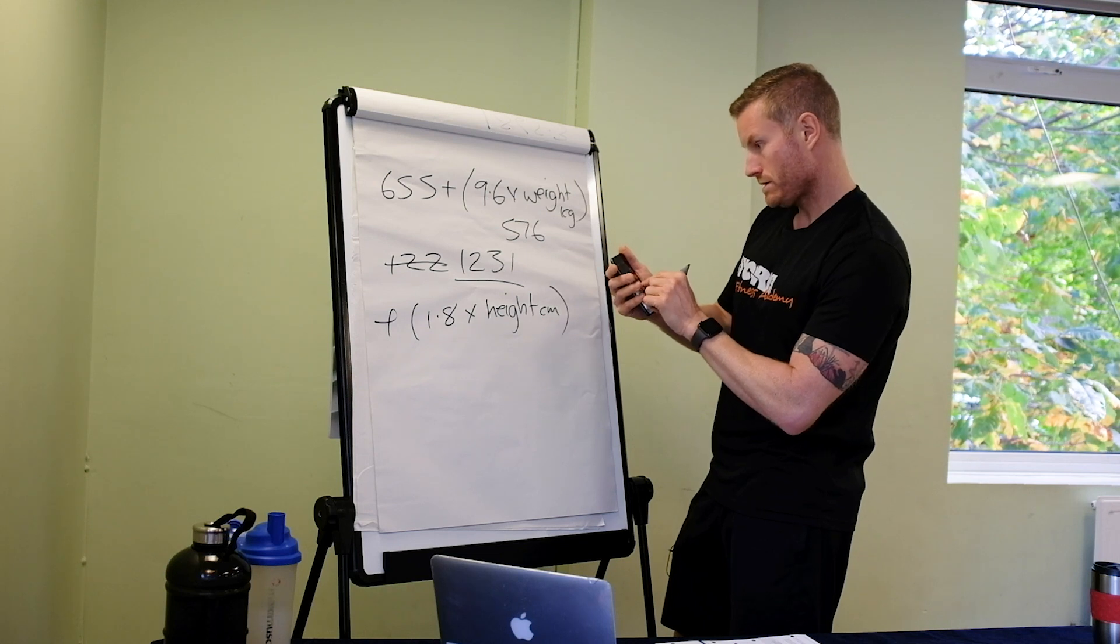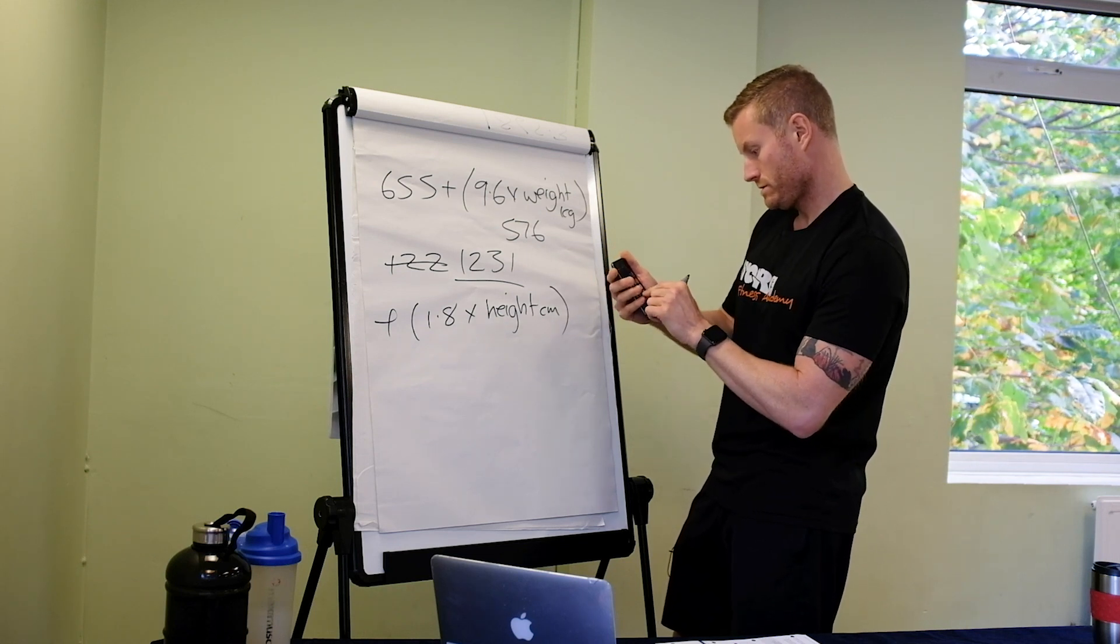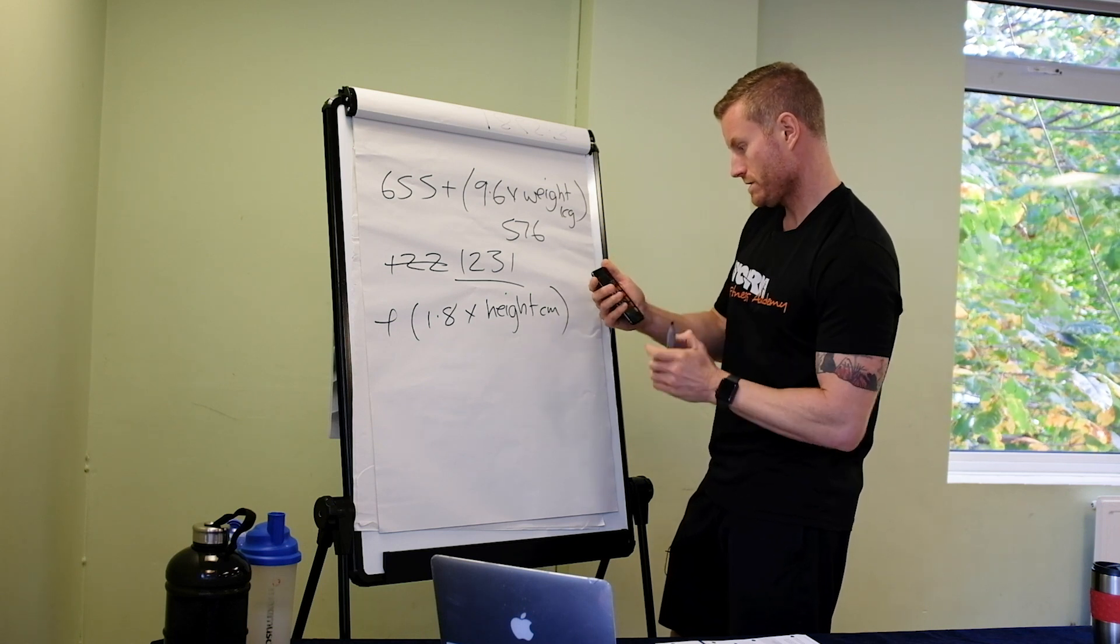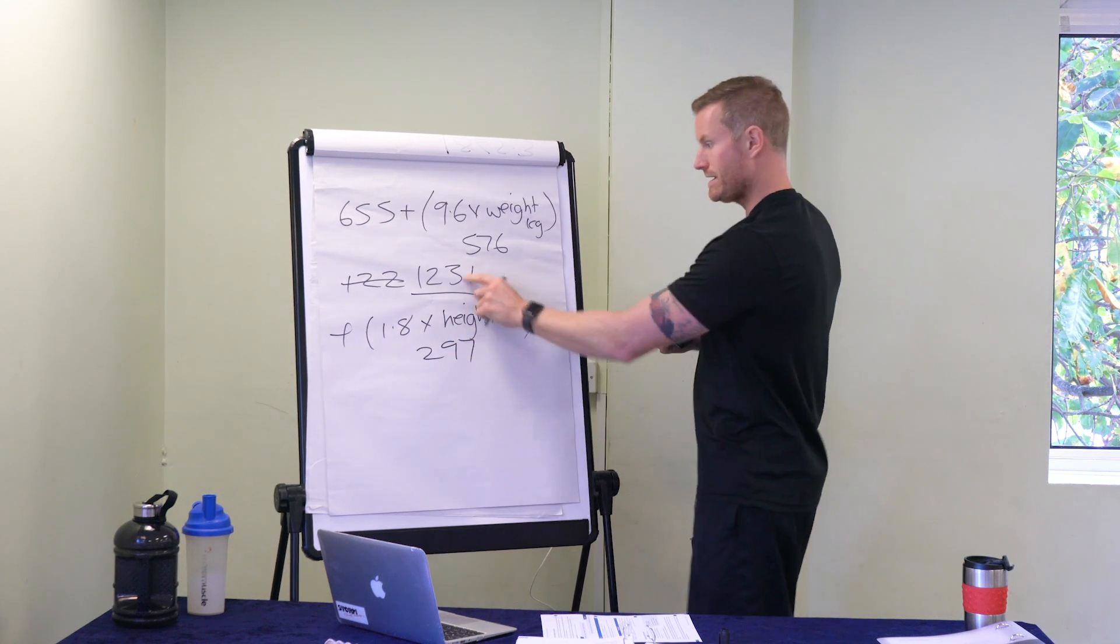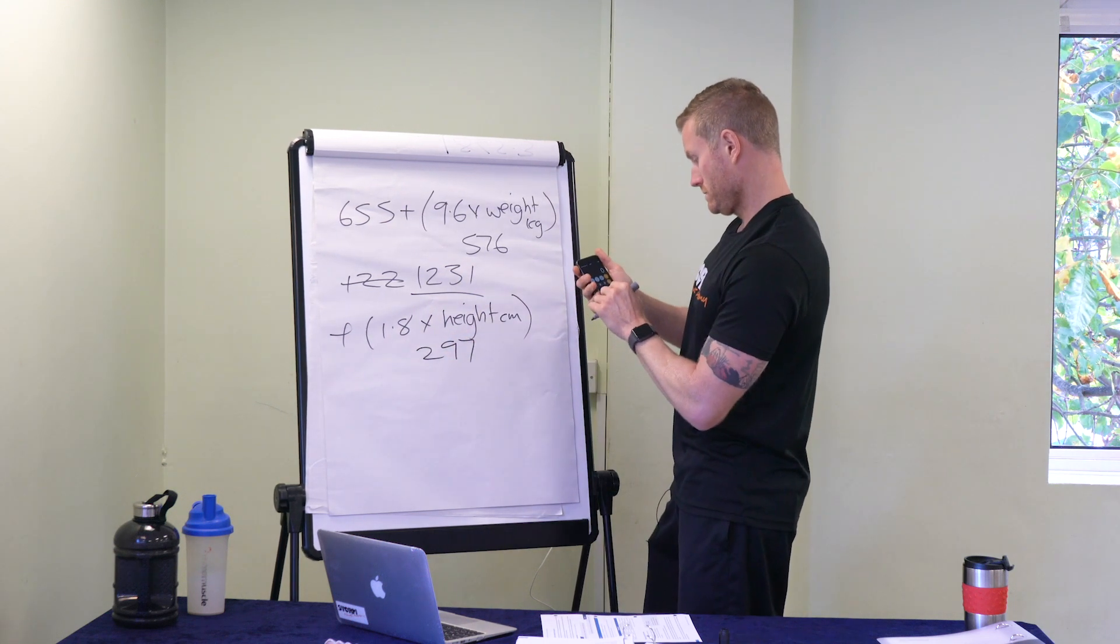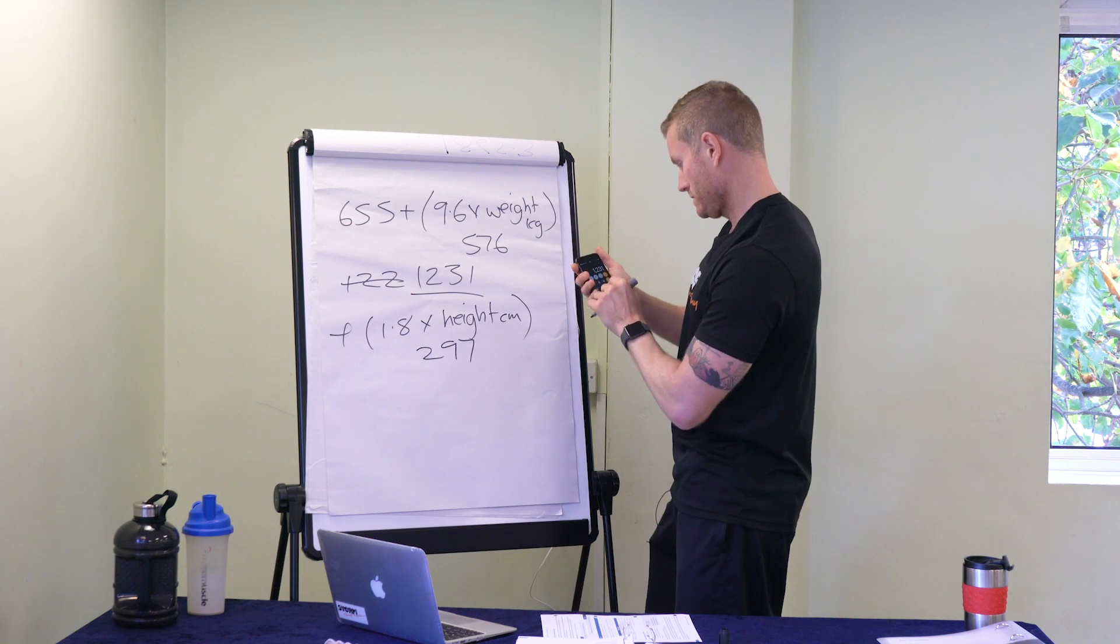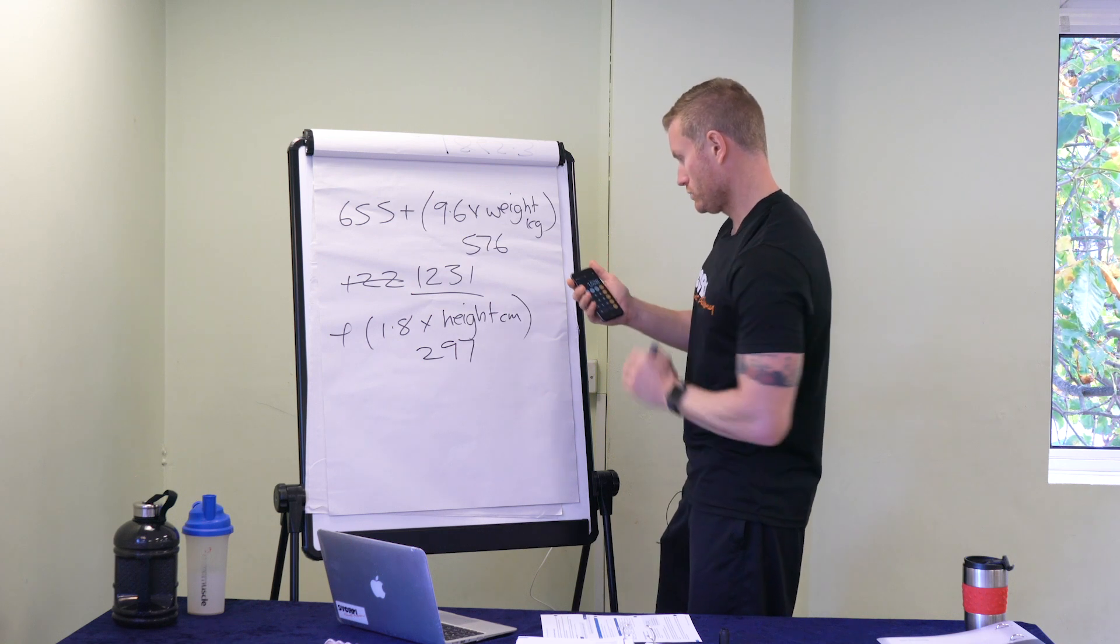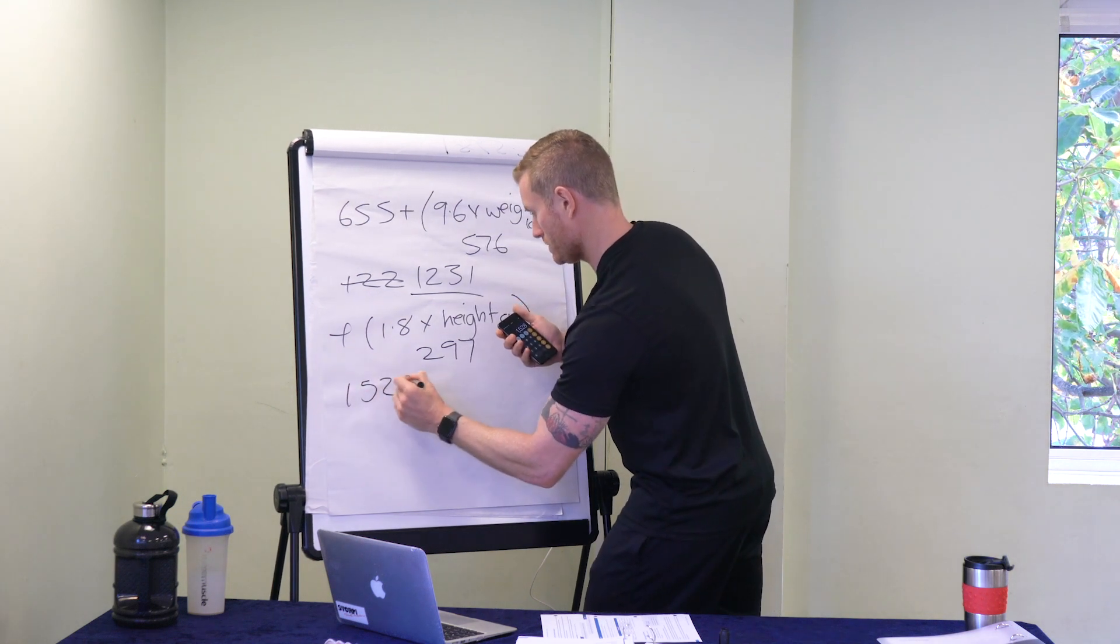So, 1.8 times 165 centimeters equals 297. So we add that to that, 1,231 plus 297 equals 1,528.